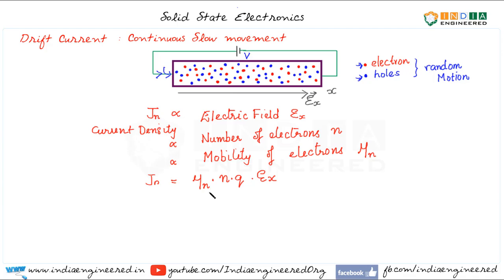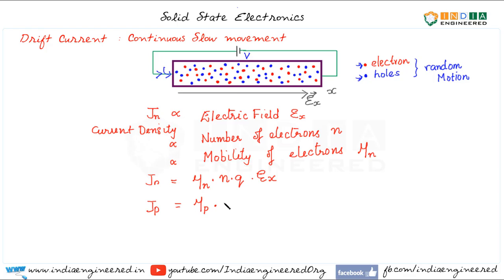Here mu_n is the mobility, and n times q is the total charge — so mobility times total charge times electric field. The current density due to holes can be written as mu_p, the mobility of holes, times the number of holes, times the charge of a hole, times the applied electric field.